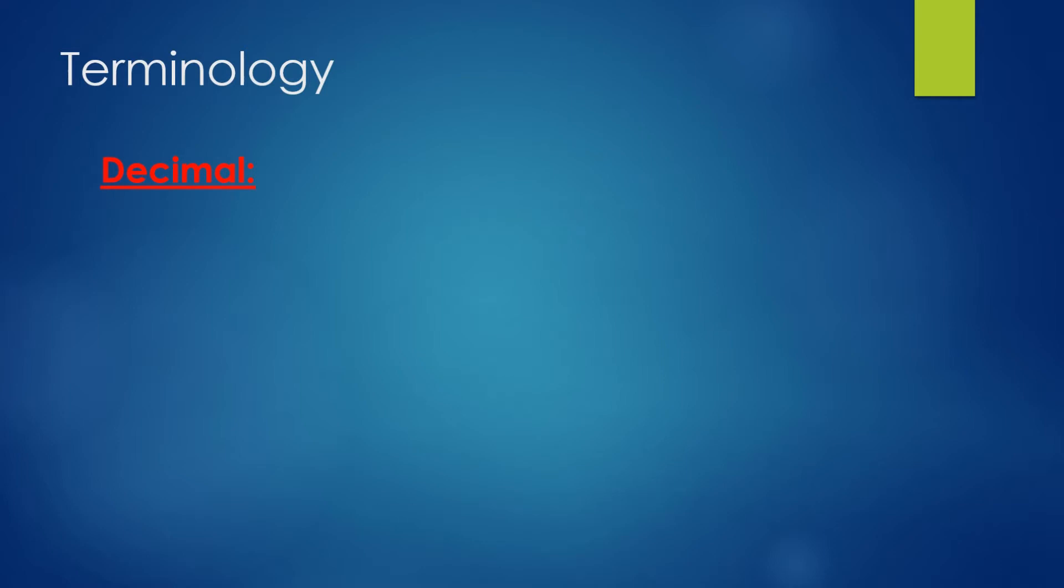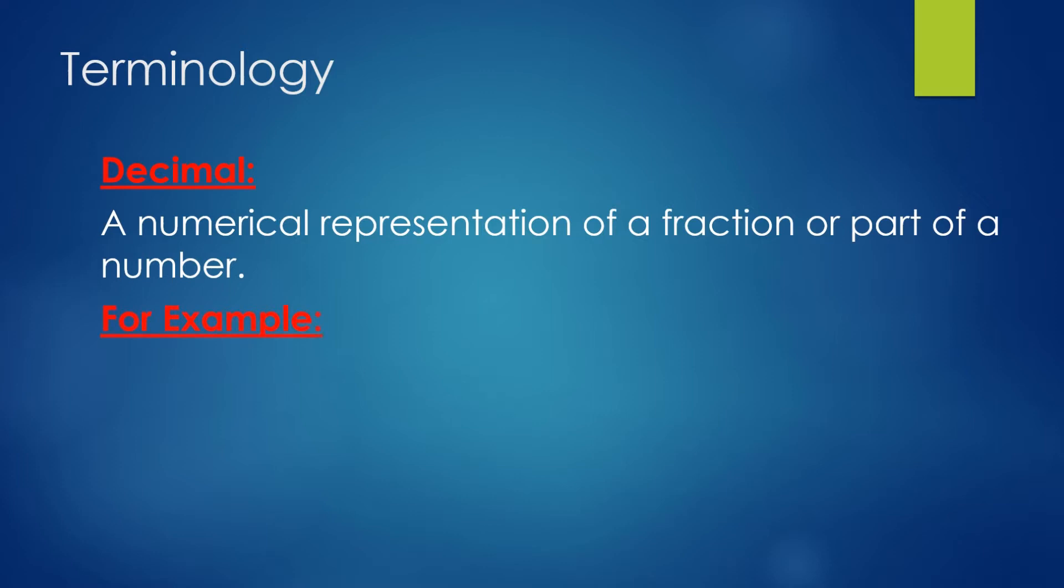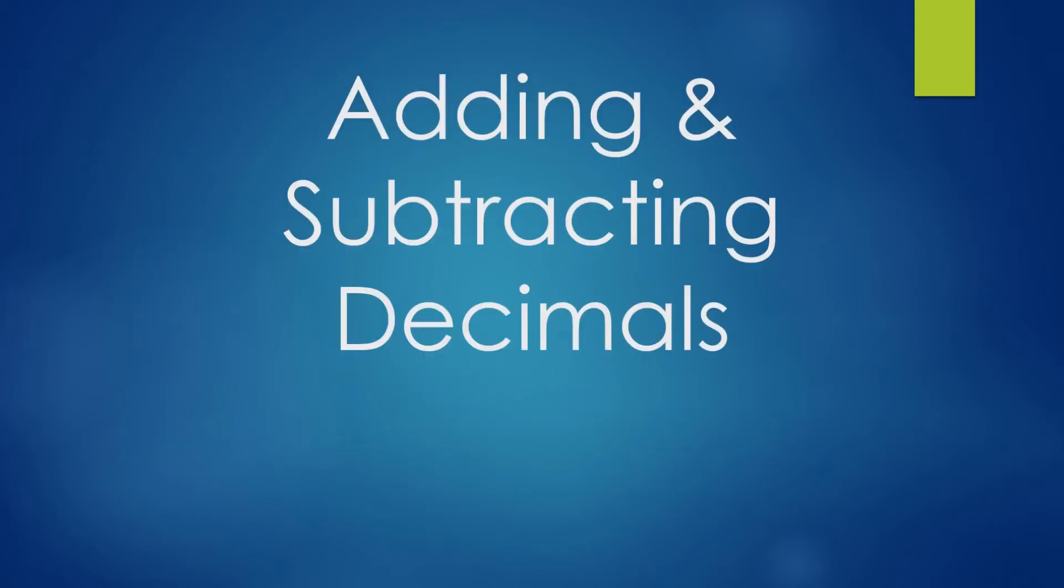The terminology here is that the decimal is a numerical representation of a fraction or part of a number. For example, if we have three sixths we divide that out we would get 0.5 and that's half which is the same thing as three sixths. Two thirds would be 0.666 repeating. One fifth would be 0.2. Negative six tenths will be negative 0.6, and one and one half would be 1.5. So these decimals are all representations of a fraction.